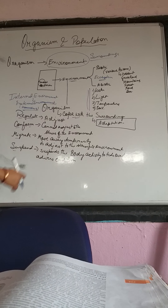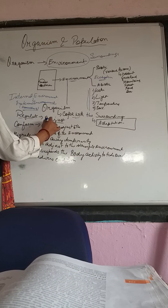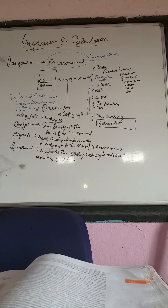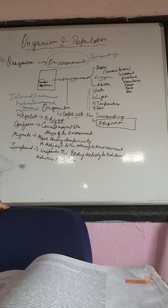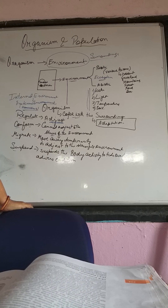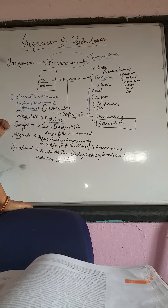Regulate means the body tries to adjust with the external environment. Conform means the body cannot adjust — it cannot handle the stress of the environment. Very few species are found in the polar region, and very few are found in deserts, because these organisms cannot adjust to certain harsh climates.